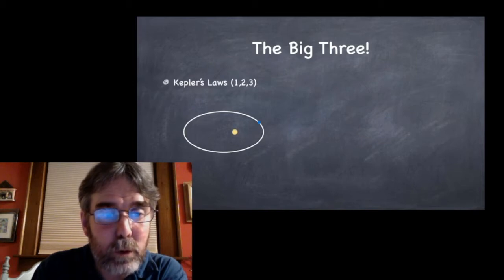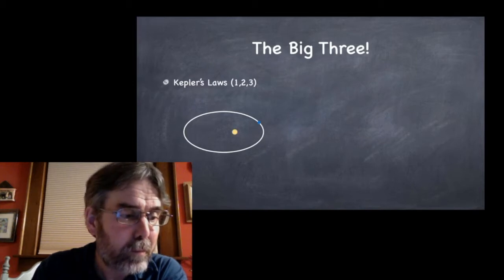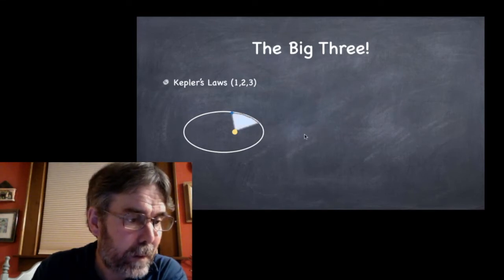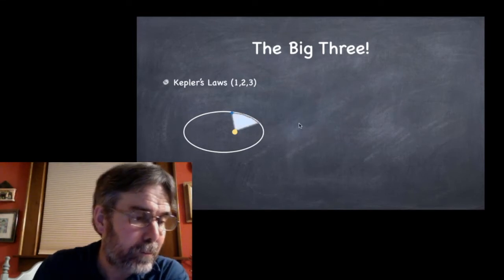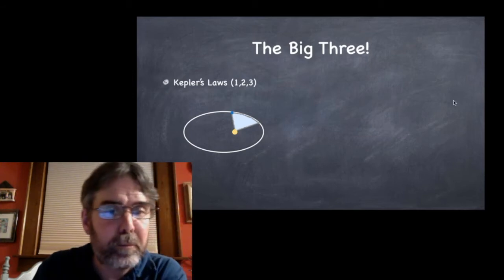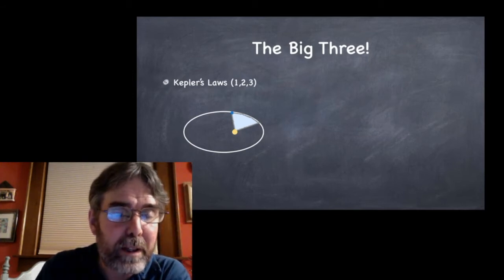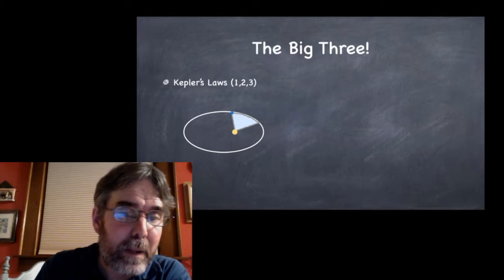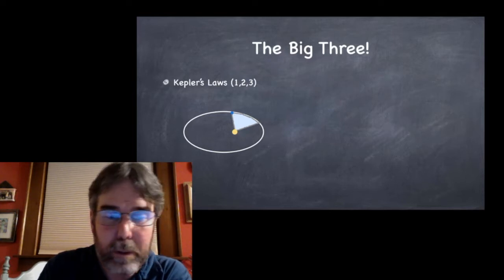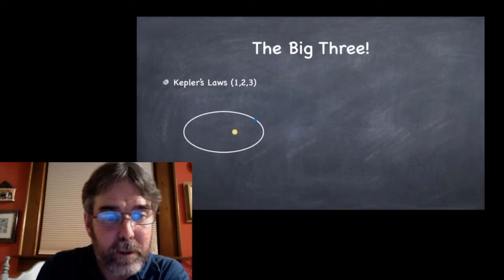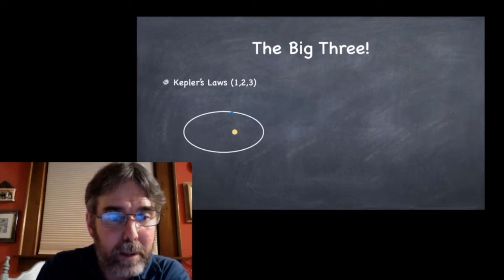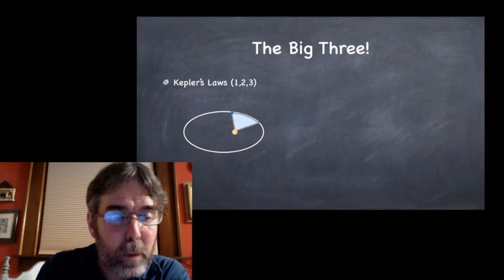So the idea is that planets move in ellipses, and the sun is at one focus of the ellipse. Not only that, when they move in an elliptical orbit, the sun is at one focus, and when the planet moves, it sweeps out an equal area in equal time.